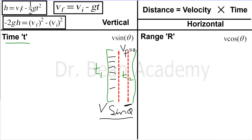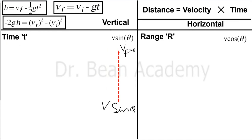We know that t1 and t2 are equal because of symmetry in motion under gravity. So we can calculate t1 and then multiply it by 2 to get the total time of flight. Let's calculate the time t for the upward motion.